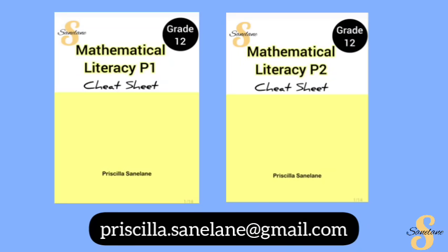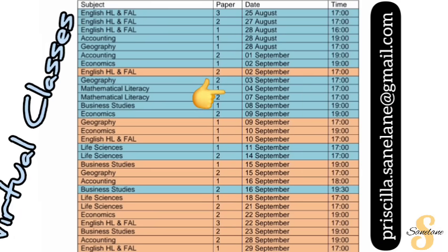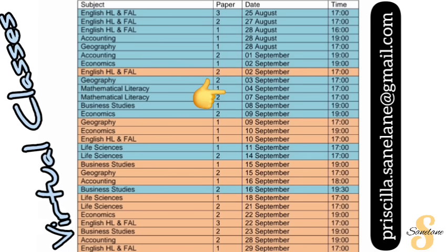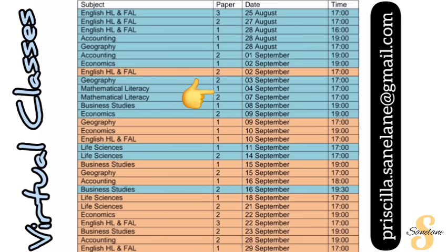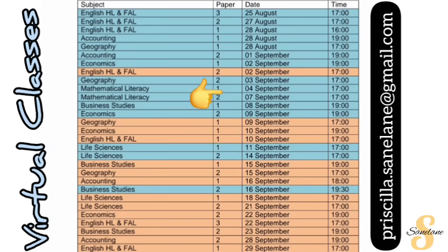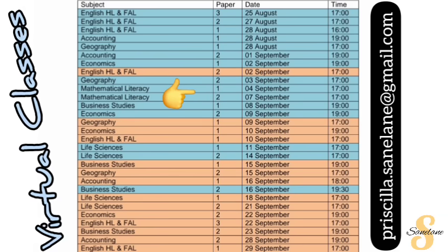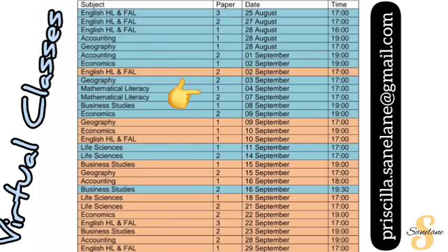We have cheat sheets for Mathematical Literacy Paper One and Paper Two. They are essentially a more detailed scope than this video, so in addition to this video, if you want a more detailed scope, that's what the cheat sheets are for — for both the preparatory examination as well as the final examination. Email me to place your order and for the price quotation. We also have visual classes to help you prepare: for Paper One, the session is on the 4th of September, and for Paper Two, it will be on the 7th of September — both at 7 o'clock. Email me for the price and booking.